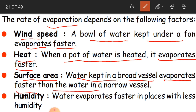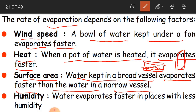The third factor is surface area. Water kept in a broad vessel evaporates faster than water in a narrow vessel. If you have water in a broad vessel, that amount evaporates faster. Water kept in a narrow vessel does not evaporate as quickly. So surface area — the area the water occupies — is an important factor.